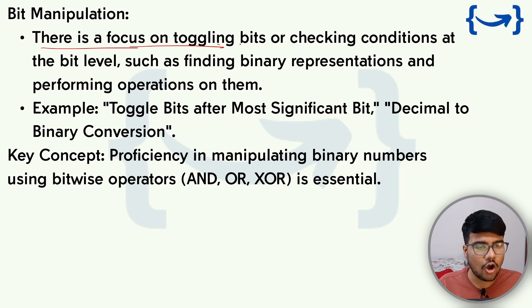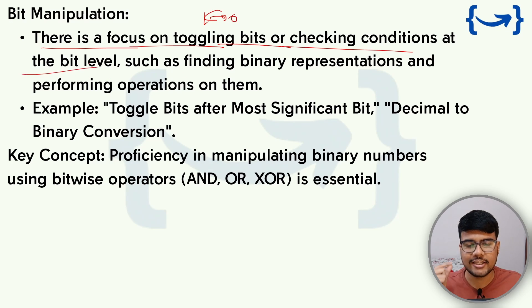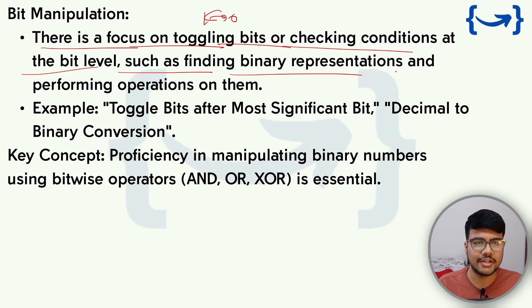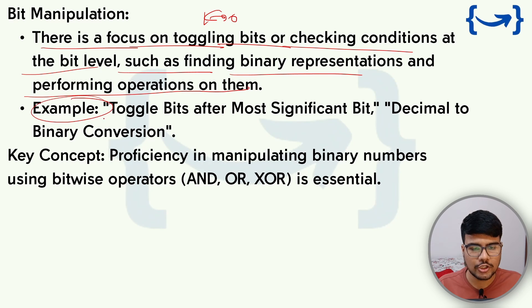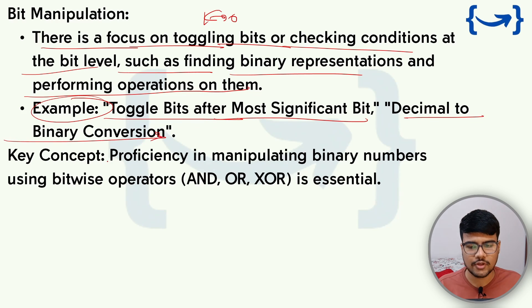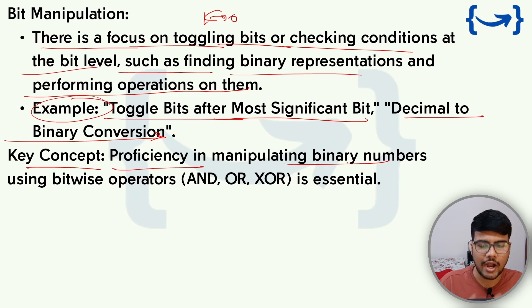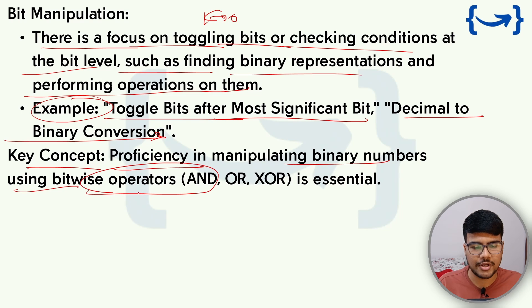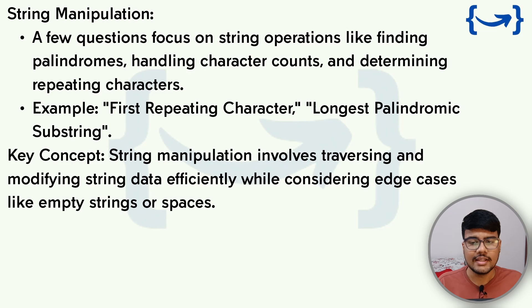For bit manipulation, there is a focus on toggling bits — converting 1 to 0 or vice versa — checking conditions at the bit level, finding binary representations, and performing operations on them. Example questions include toggle bits after the most significant bit and decimal-to-binary conversion. Key concept: proficiency in manipulating binary numbers using bitwise operators AND, OR, and XOR is essential.